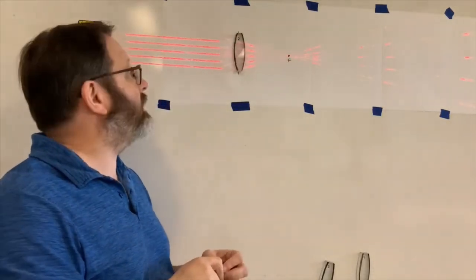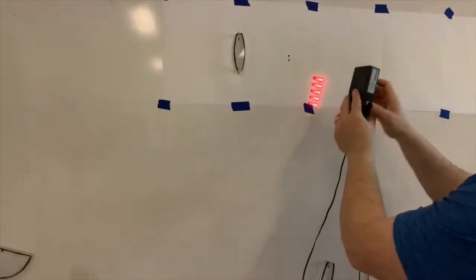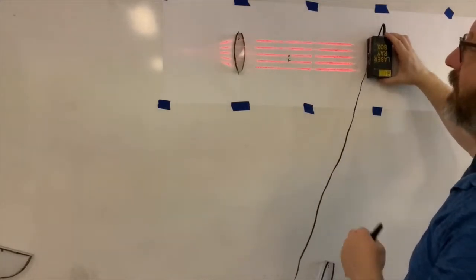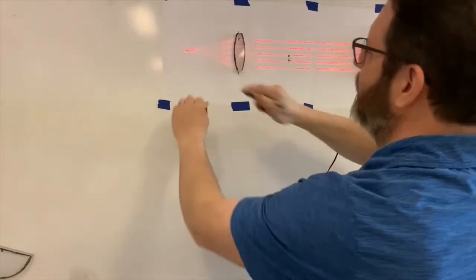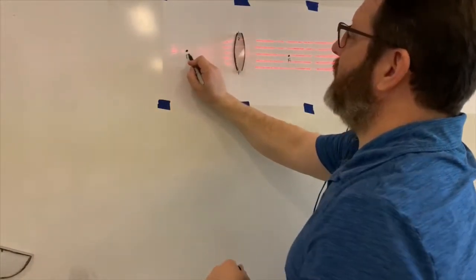Interesting thing about a lens, it doesn't just have one focal point. If I take the laser, put it on the other side, line it up horizontally, it creates another focal point over here. So there's another focal point right there.